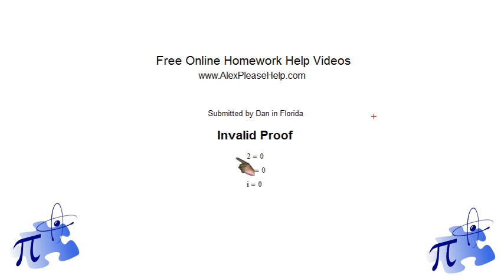He submitted to me an invalid proof and is wondering what the heck is the matter with this proof. The proof, the so-called proof, claims to say that 2 equals 0 or that pi equals 0 or that the imaginary number i equals 0. All three of them, go figure. So let's take a look at this thing.